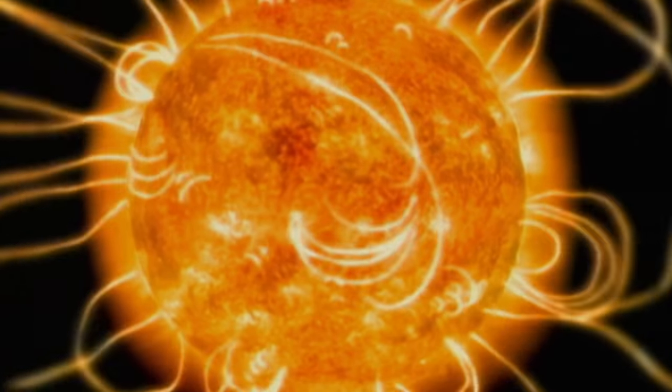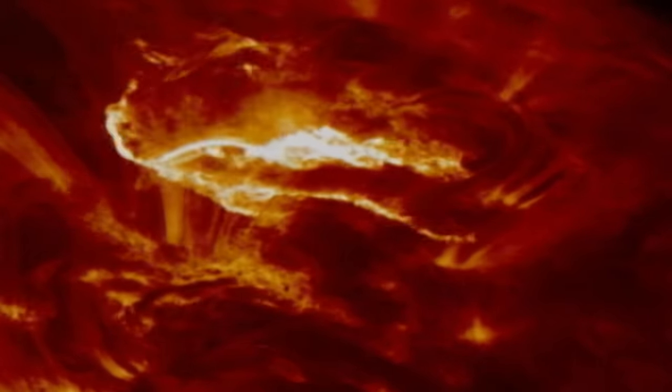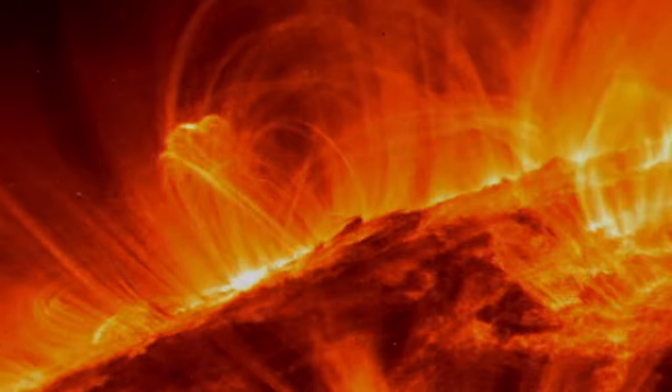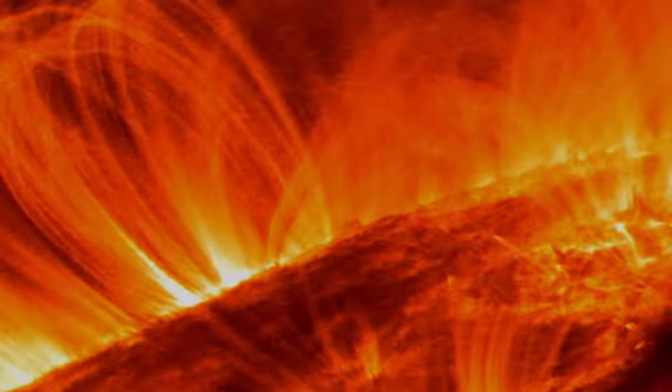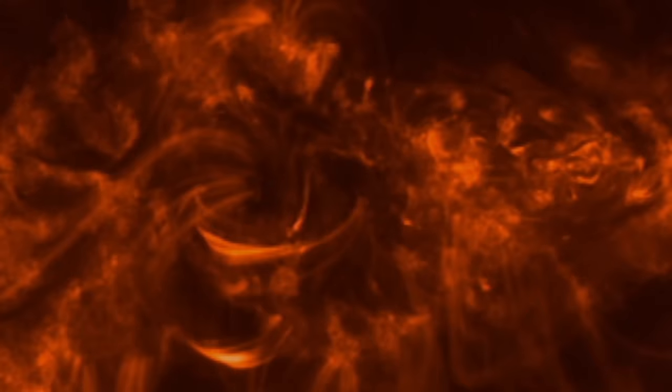Along each loop flow billions of tons of superheated plasma, electrically charged protons and electrons. A single loop contains the energy equivalent to 10 million volcanoes erupting at once. These loops are sometimes the first sign of an impending solar storm.